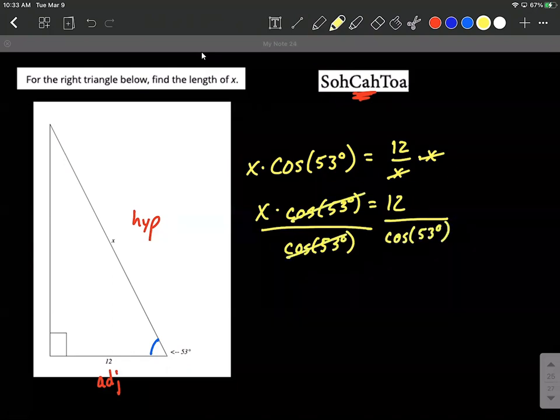As these cancel out and make a 1, we get x is 12 divided by cosine of 53 degrees.